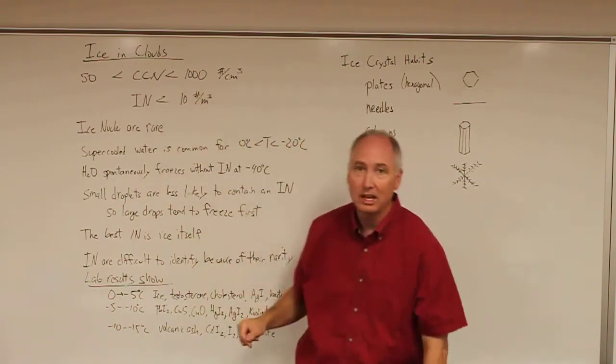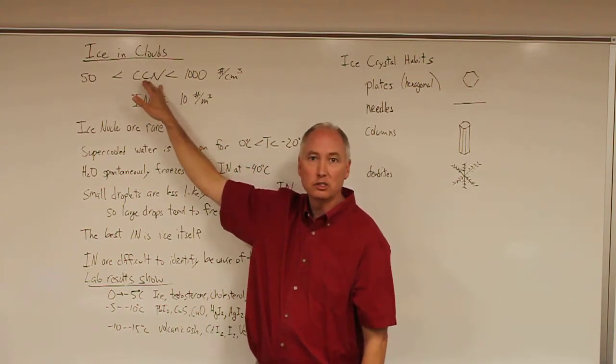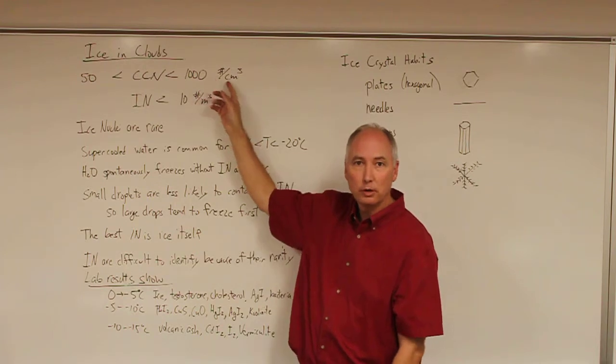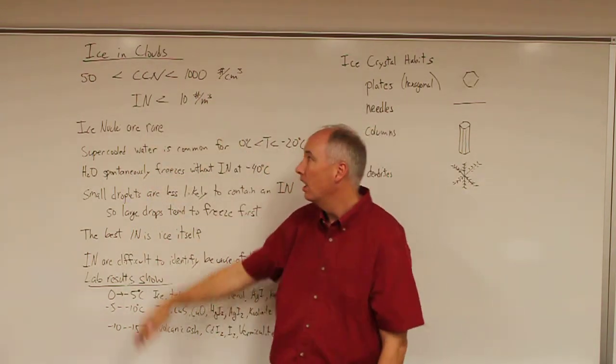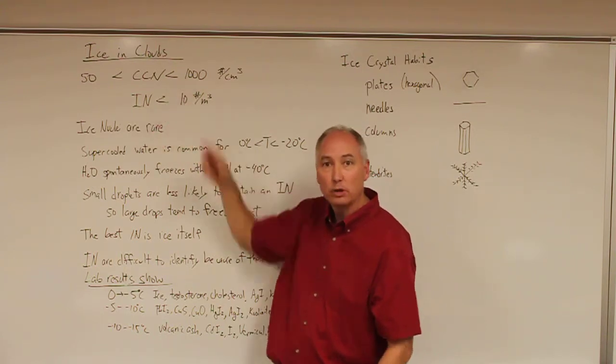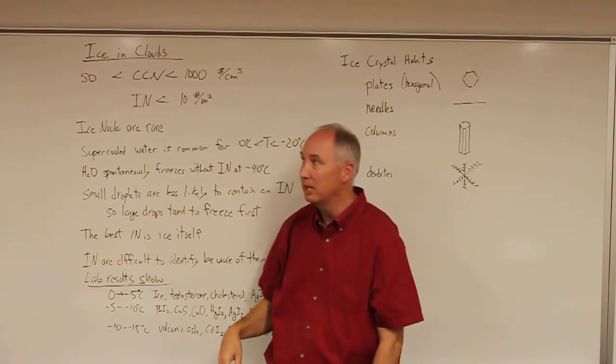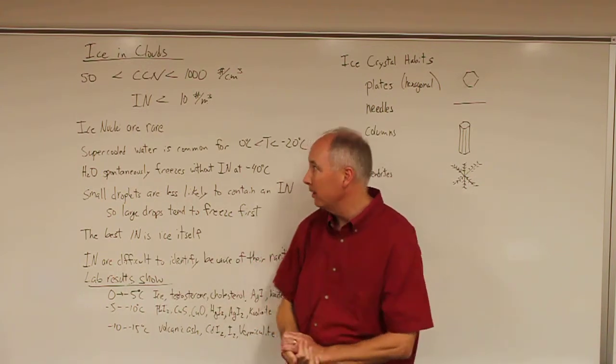What do we know about icing clouds? Cloud condensation nuclei number concentrations range between 50 and 1,000 per cubic centimeter. Ice nuclei, on the other hand, are very rare—generally less than 10 per cubic meter, which is a huge volume compared to a cubic centimeter. Generally speaking, ice nuclei are much less than one per cubic meter.